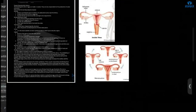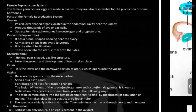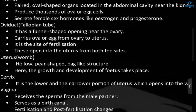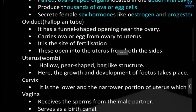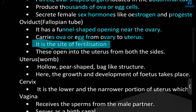Now we will talk about the female reproductive system. In the female reproductive parts, we have the ovary, fallopian tube or oviduct, cervix, uterus, and vagina. Ovaries are paired — we have two. They are oval-shaped organs located in the abdominal cavity near the kidneys. They produce thousands of eggs and secrete female sex hormones called oestrogen and progesterone. The oviduct has a funnel-shaped opening near the ovary and carries the ova from the ovary to the uterus. It is the site of fertilization — very important. The site of fertilization is the oviduct or fallopian tube.